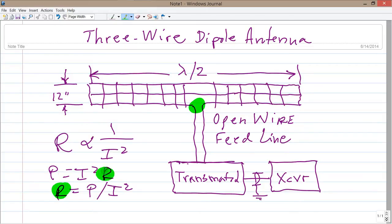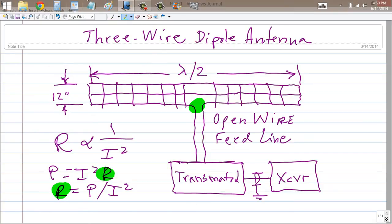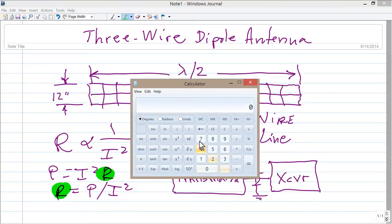So you're going to have nine times the resistance that you would have at the center of a single-wire half-wave dipole, and it will be a purely resistive impedance. Let's just check this out. Let's look at our handy-dandy calculator and get a pretty exact figure here. 73 ohms for the resistance at the center of a single-wire dipole times nine. 657 ohms.